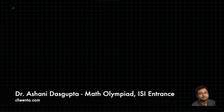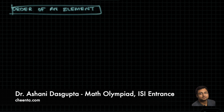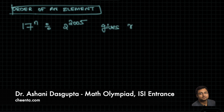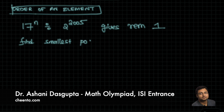Welcome to the second video on order of an element. If you have not watched the first video, please look at the link in the description. Our motivating problem is: 17 to the power n divided by 2 to the power 2005 gives remainder 1 — find the smallest positive value of n.